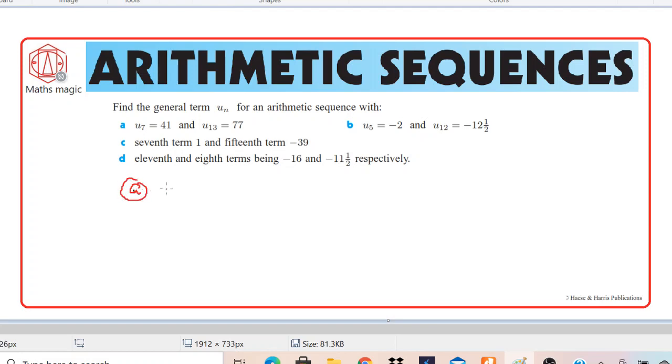We are having U7 equals 41 and U13 equals 77. Do you remember I told you in some previous videos that if we have U7, we can write that as U1 plus 6D. If you don't know or if you have not watched, you can go back and watch those previous videos. And then we are having U13, so we can write U13 as U1 plus 12D.